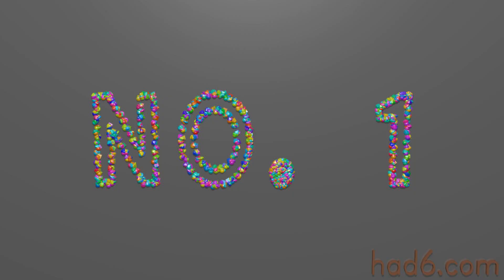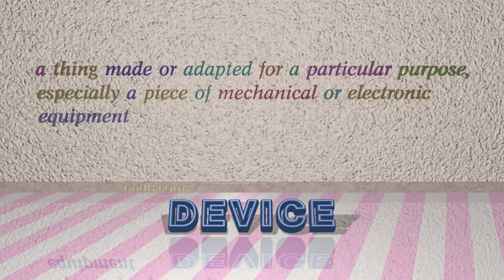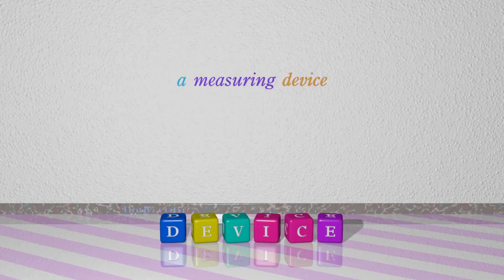Number 1: Device — which means a thing made or adapted for a particular purpose, especially a piece of mechanical or electronic equipment. For example: a measuring device.